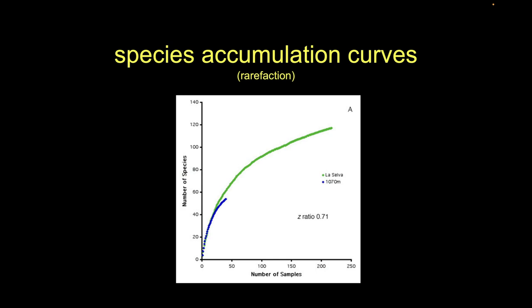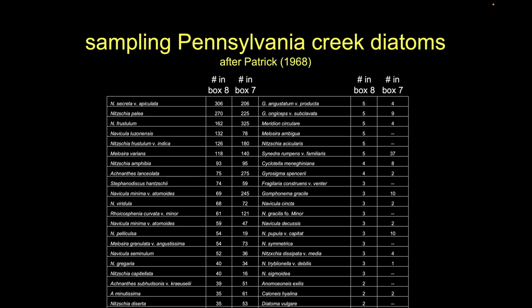Here's some real data from diatoms in the bottom of a creek in Pennsylvania. A researcher threw down sampling grabs on the creek bottom, brought material back to the lab, sorted through everything, and counted all the different diatom species and how many of each were encountered. This is a subset of a much larger data set. For example, this particular species had 306 individuals in one sample and 206 in another. The natural world is variable — some species had 5 in one box and 37 in another, or 5 in one and none in the next.